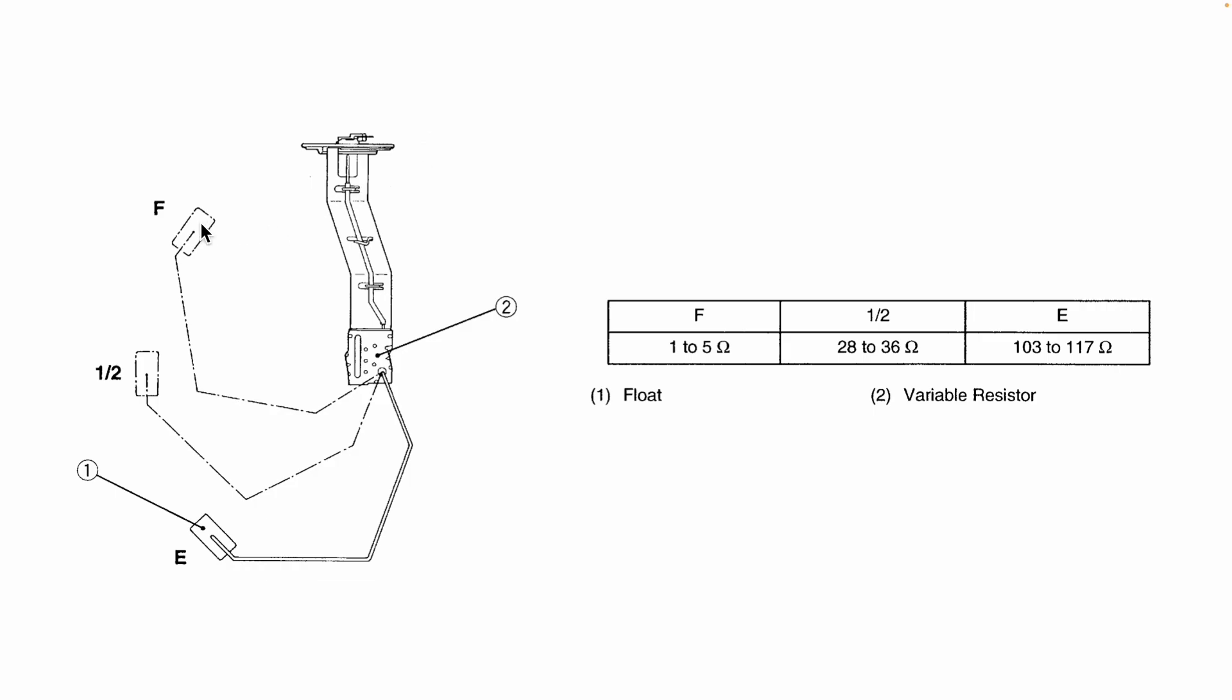The sensor has a float on it, and as the name implies, the float floats on top of the fuel in the tank, meaning that as you add fuel, the float goes up, and as the tractor burns fuel, it goes back down. The float is attached to an arm that connects to the body of the sensor. At the point of connection is a variable resistor, meaning that as the arm moves back and forth, the resistance of that resistor changes, and it changes in accordance with the values in this table.